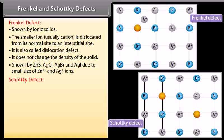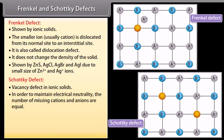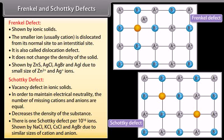Schottky defect is a vacancy defect in ionic solids. In order to maintain electrical neutrality, the number of missing cations and anions are equal. It decreases the density of the substance. There is one Schottky defect per 10 to the power 16 ions. Shown by NaCl, KCl, CsCl, and AgBr due to similar sizes of cation and anion.